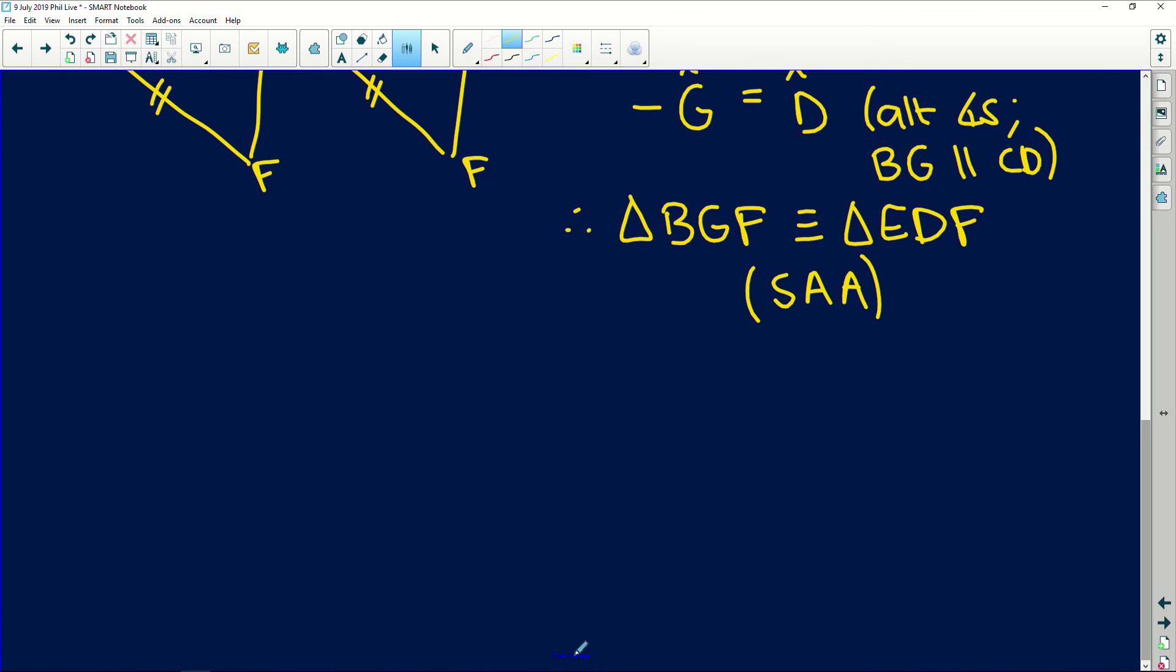So now we can say, therefore, BG is equal to ED. And why? Because of congruency. We have just proved that those two triangles are congruent to each other. That's what this symbol here means. It means they are exactly the same.